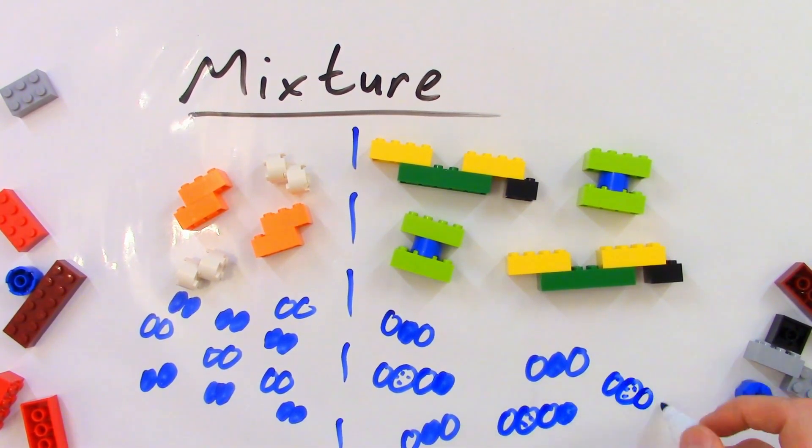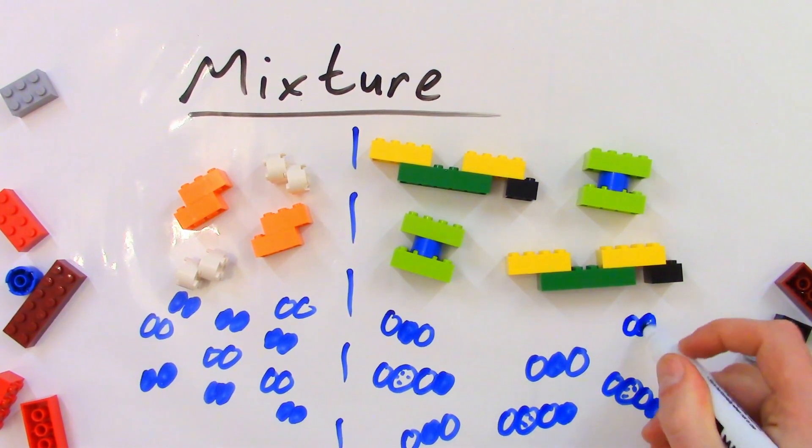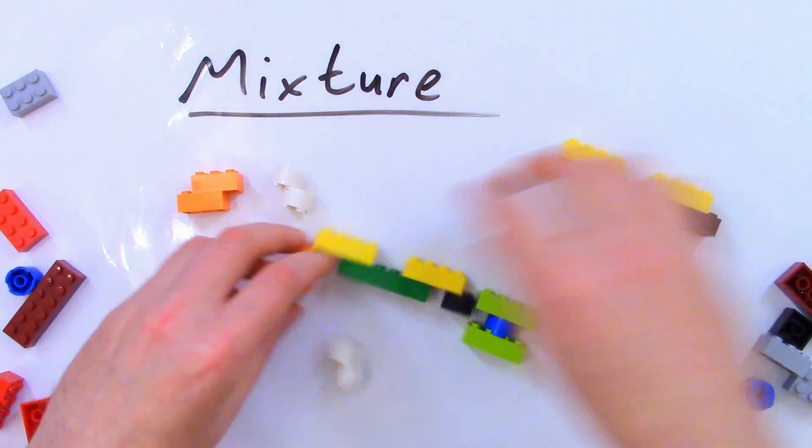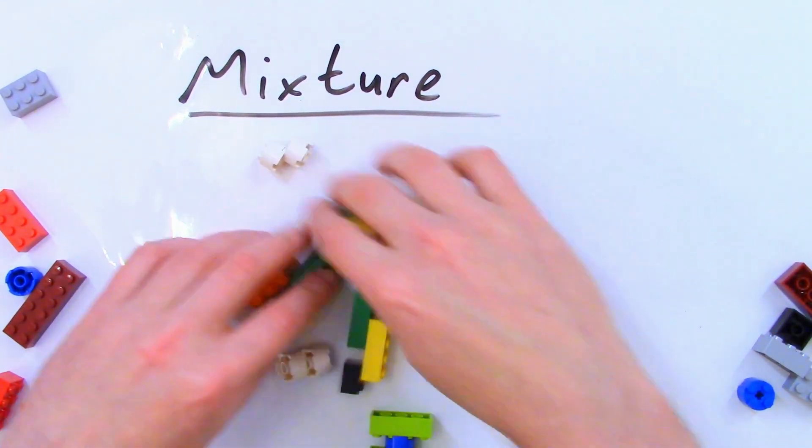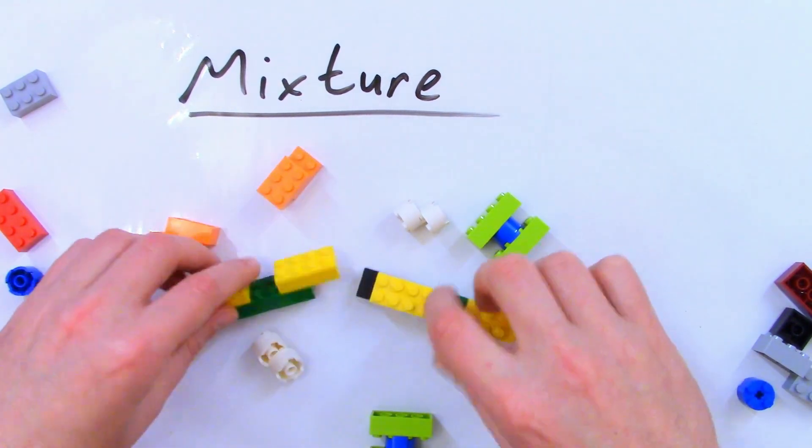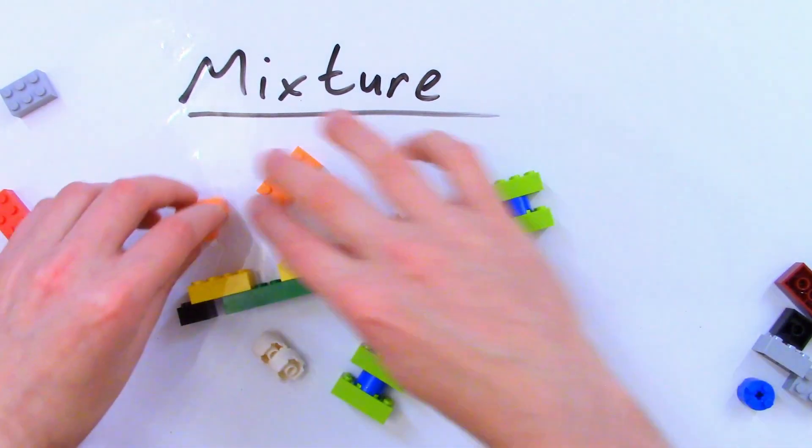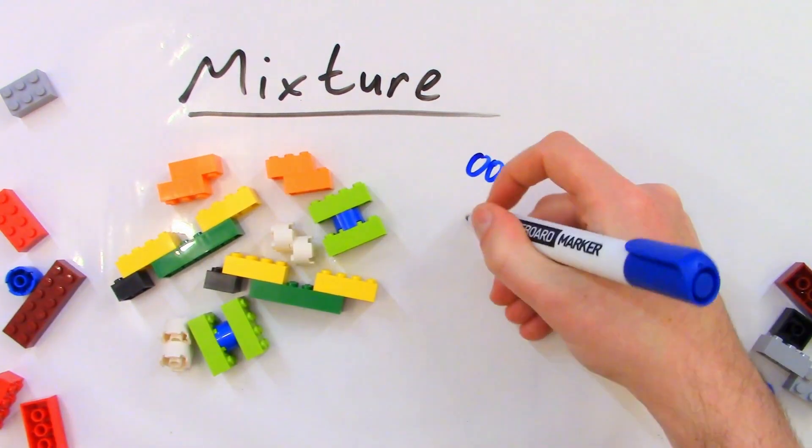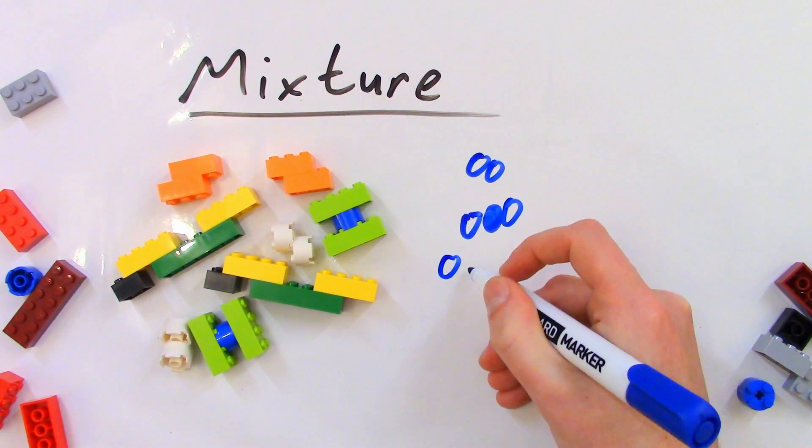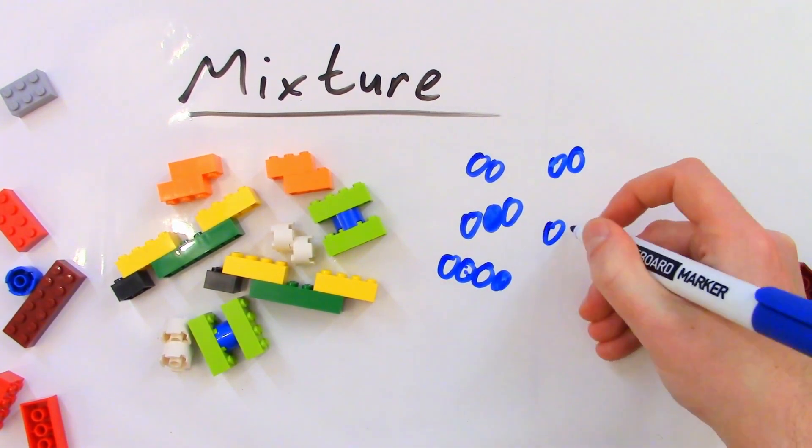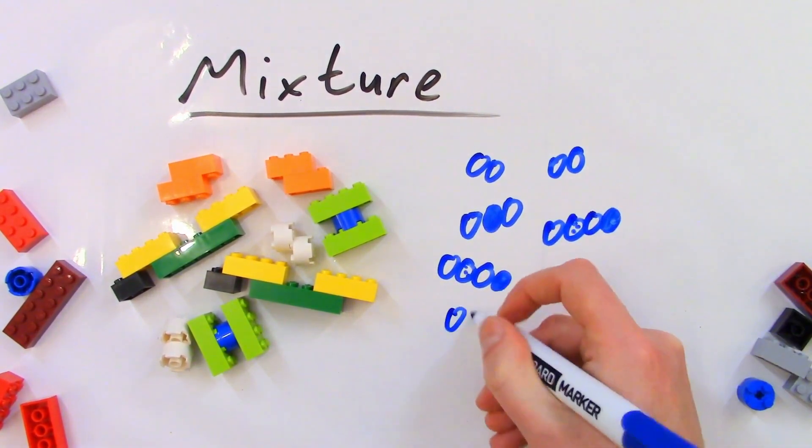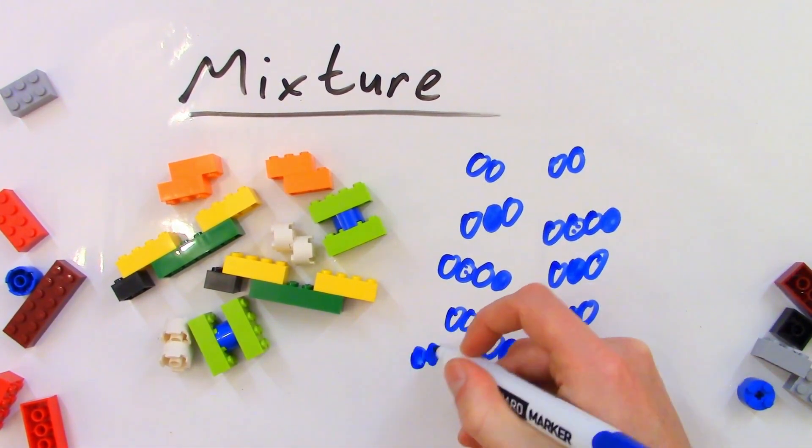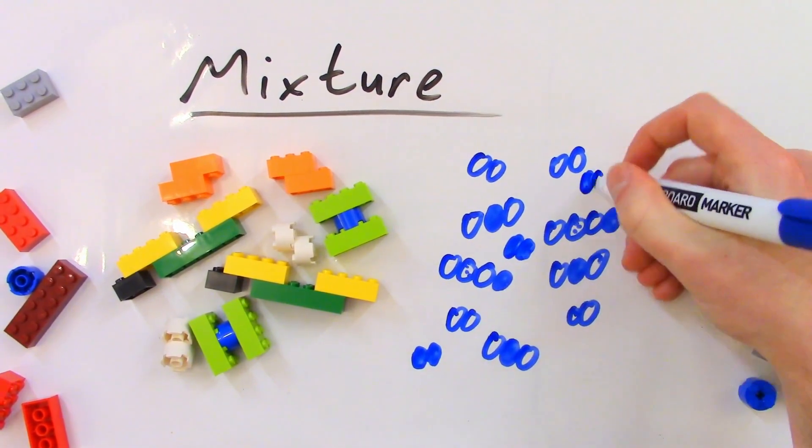We could even have mixtures of both elements and compounds like this. It really doesn't matter what combination of substances we have. So long as you see two or more different substances which are not bonded to one another, then it's a mixture. Aside from air and sugar water, there are a lot of other mixtures. All solutions, such as salt water, are mixtures. Crude oil, before we process it, is a mixture. Alloys, where we take two or more metals and combine them, such as bronze, steel and brass, are all mixtures as well.